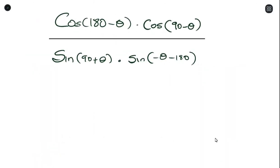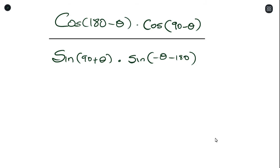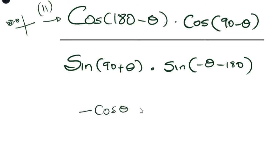Let's try an example of co-functions in the context of reduction formula. We have an expression to simplify. The first term reminds us of the second quadrant, and cosine in the second quadrant is negative — so this becomes negative cosine theta. The next term is cosine(90 minus theta), which is in the first quadrant. Because of the 90, cosine changes to sine, giving us sine theta. All of this is over the next part.